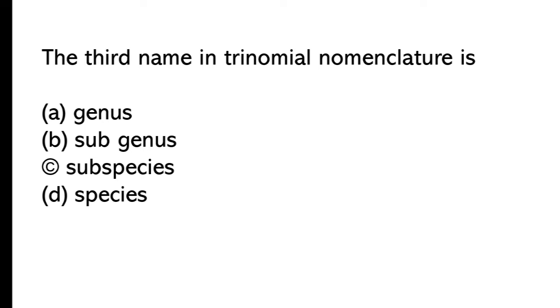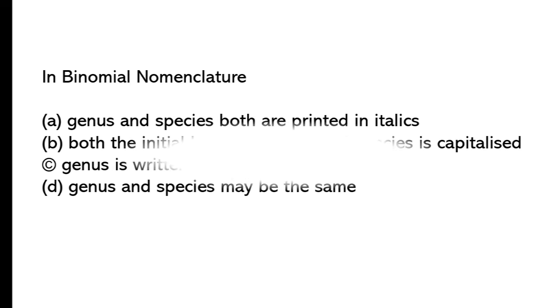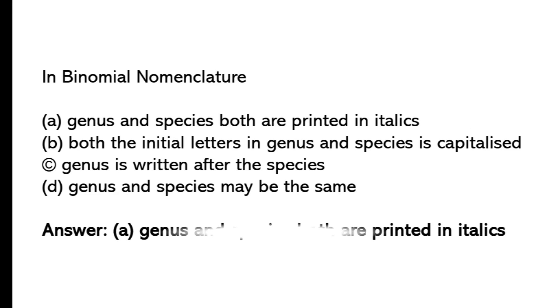The third name in trinomial nomenclature is: genus, subgenus, subspecies, species. So the correct answer is option C, subspecies. In binomial nomenclature, genus and species both are printed in italics. Both the initial letter in genus and species is capitalized. Genus is written after species. Genus and species may be the same. So the correct answer is option A, genus and species both are printed in italics.